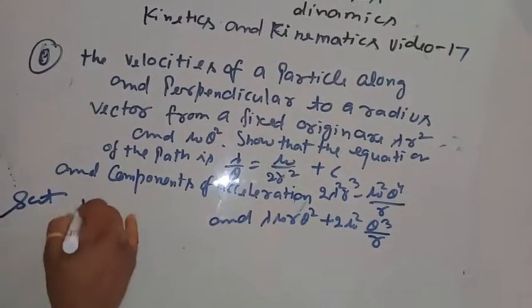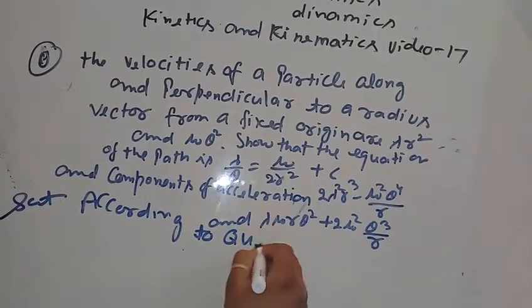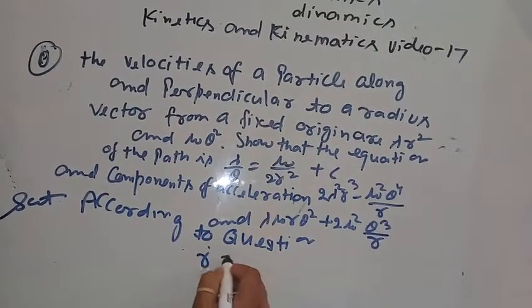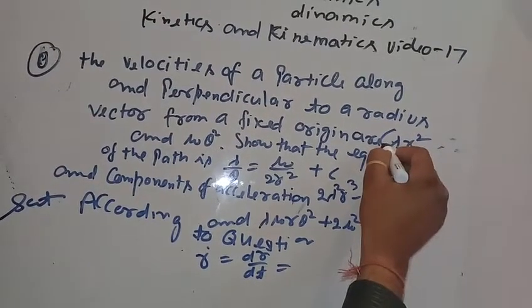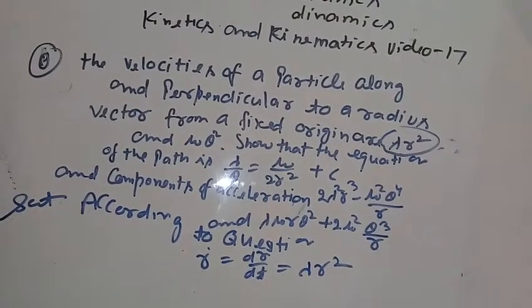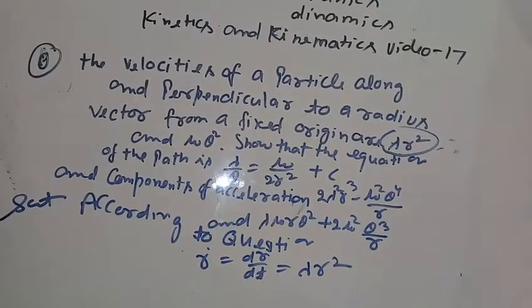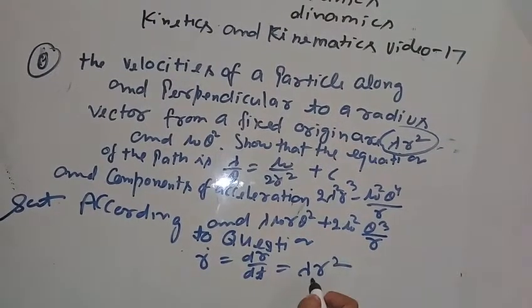Solution: According to the question, r dot, which is dr/dt, is the velocity along the particle. The velocity along is dr/dt equals lambda r squared. This is equation number one.